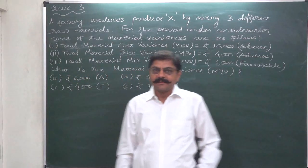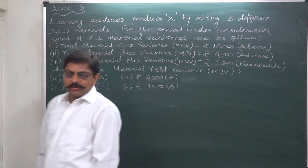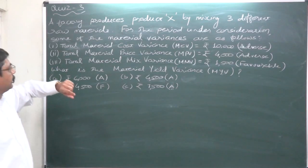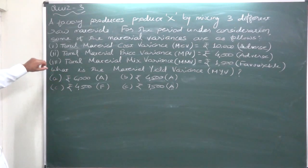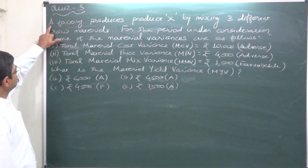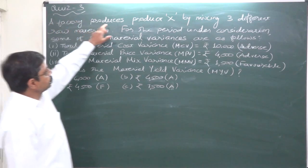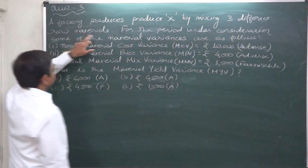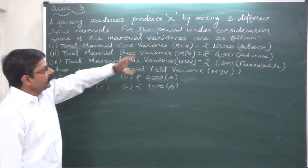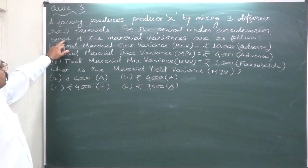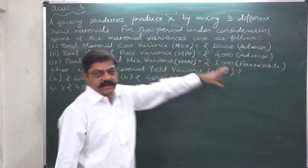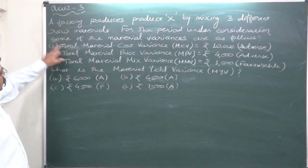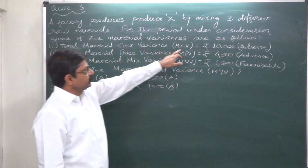Hello and welcome friends. Let's discuss the solution of Quiz 3. The problem posted as Quiz 3 is: a factory produces Product X by mixing or blending three different raw materials. For the period under consideration, some of the direct material variances are as follows.